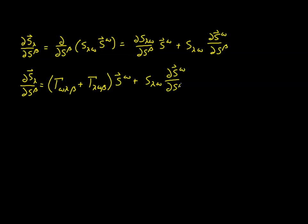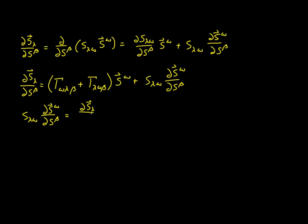All we've done is replace that factor with its equivalent. Now we switch sides of the equation, putting the term S_{lambda omega} times the partial derivative of the contravariant basis vector first. That equals the partial derivative of the covariant basis vector with respect to S_beta, minus gamma_{omega lambda beta} times S^omega, minus gamma_{lambda omega beta} times S^omega.